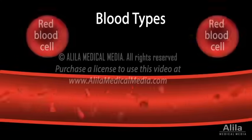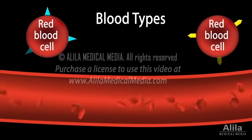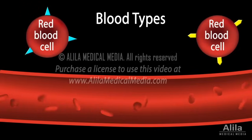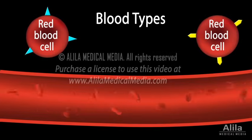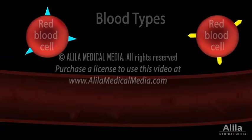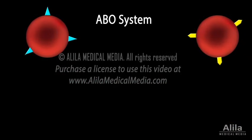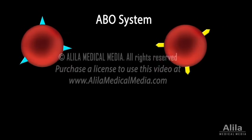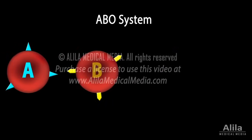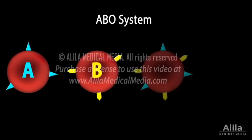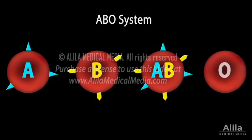A blood type refers to the presence or absence of a certain marker or antigen on the surface of a person's red blood cells. For example, in the ABO system, presence of A or B antigen gives type A or B, presence of both antigens gives type AB, while their absence gives type O.